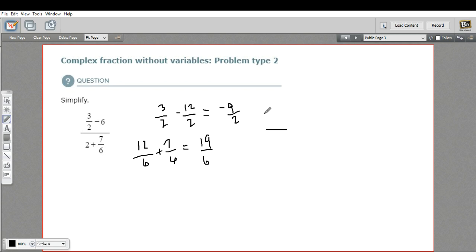Let me rewrite that fraction. So I've got negative 9 halves over 19 sixths. Well, you may say this doesn't really look that much simpler. I've still got fractions inside fractions.